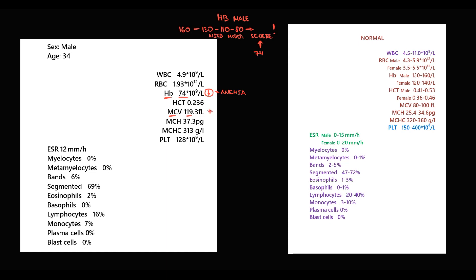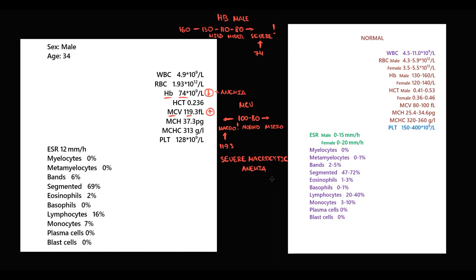The type of anemia according to the size of red blood cells is determined by MCV. We need to know two values: 80 and 100. Red blood cells with MCV between 80 and 100 are called normocytes, greater than 100 macrocytes, and lesser than 80 microcytes. In this case MCV is 119, so it's macrocytes — thereby it's severe macrocytic anemia.